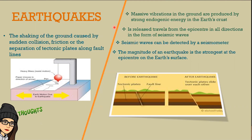The reading of a seismometer is referred to the Richter scale to determine the magnitude of the quake. On the left you can see a device that detects the Earth's motion due to the earthquake.